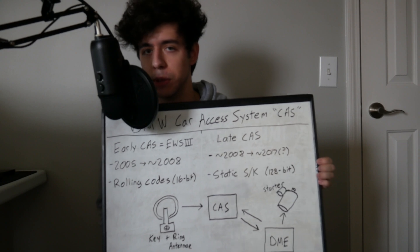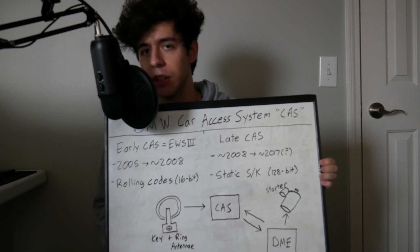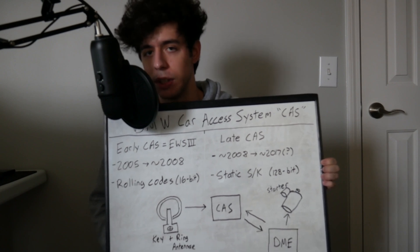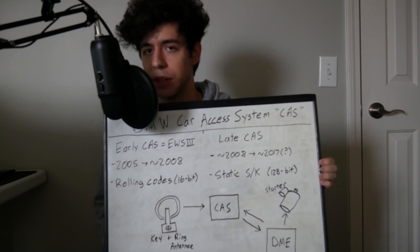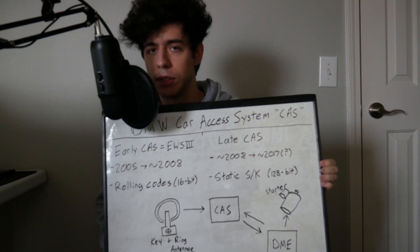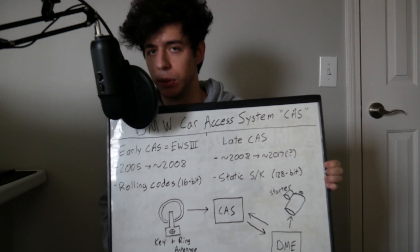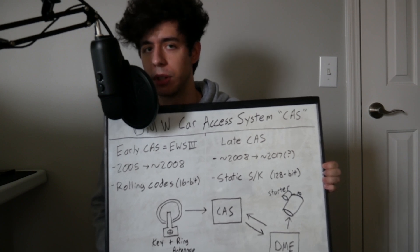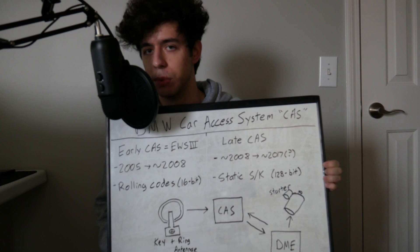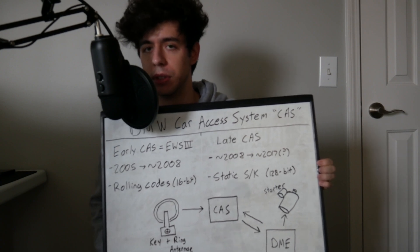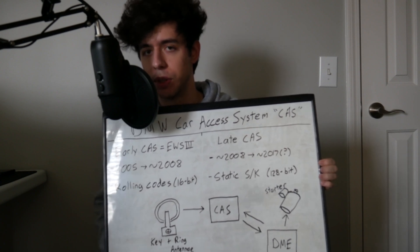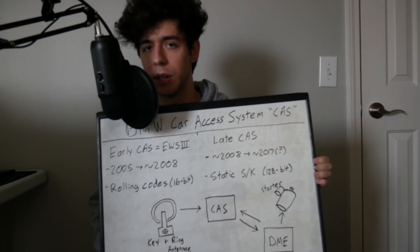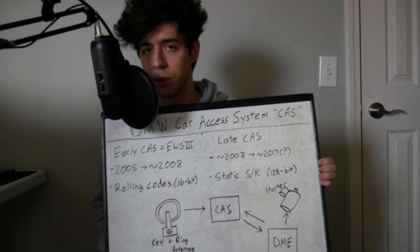The real unfortunate part is that if your CAS module does fail, there's not really a whole lot you can do to fix it — you have to get a new one and have it synchronized to match the code with your DME. That said, if you have a model with an early CAS module and you're experiencing a no-start condition, it's not necessarily a failed module; the module and DME may have fallen out of sync with each other. This is actually the reason why BMW scrapped the rolling table idea in the first place.